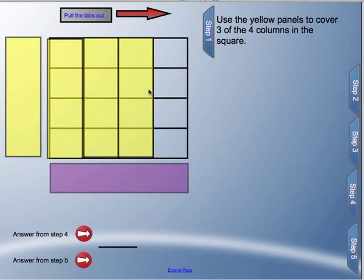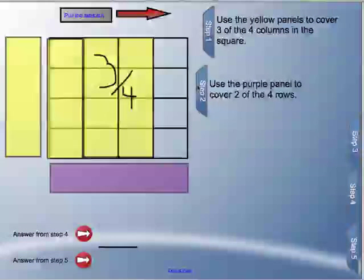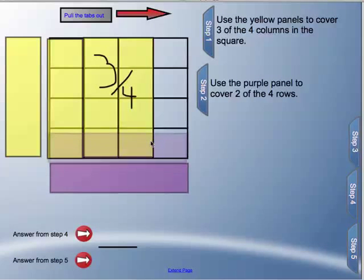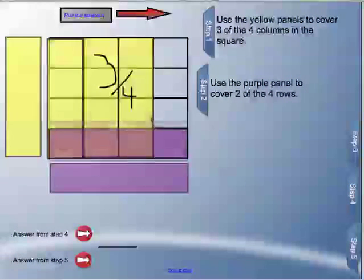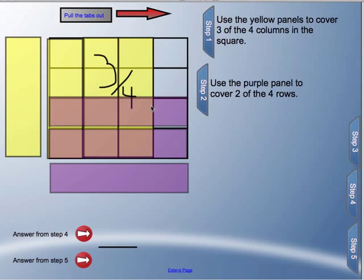So right now I'm taking three-fourths, and that's what I'm starting with. So then in step two, I'm gonna cover two of the four rows. And now I'm looking at the rows, covering two of those four rows with the purple. So I've got two of four covered, so two of four is my other multiplier.